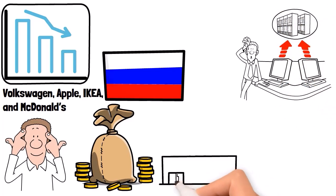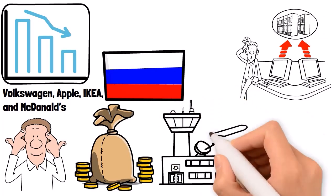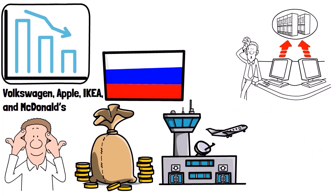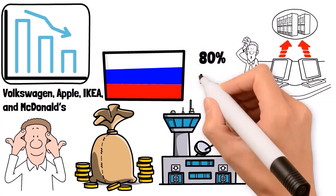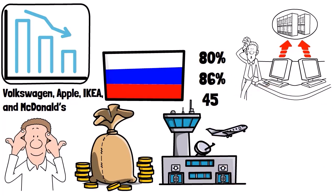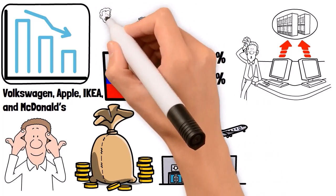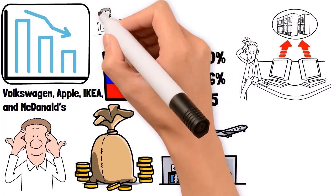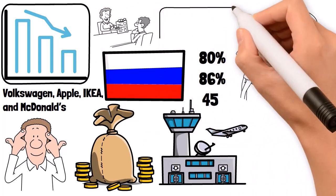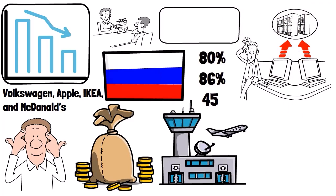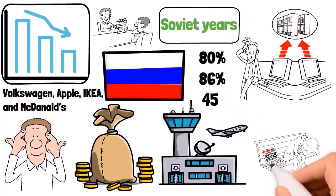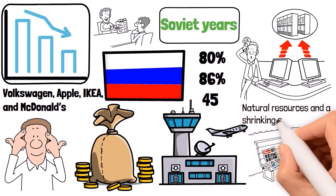Compounding the issue is the brain drain phenomenon. Since the conflict began, there has been a mass exodus of young, educated Russians seeking opportunities abroad. By some estimates, 80% of those who have left are college educated and 86% are under the age of 45. This loss of human capital is devastating as it deprives the country of its most innovative and productive individuals, leading to weakened productivity and anemic innovation. The cumulative effect of these factors could see Russia's economy shrink back to levels reminiscent of the Soviet years. The Soviet economy was characterized by its focus on heavy industry and military might, often at the expense of consumer goods and services. With the current trajectory, Russia risks a similar imbalance, with a heavy reliance on natural resources and a shrinking service sector.